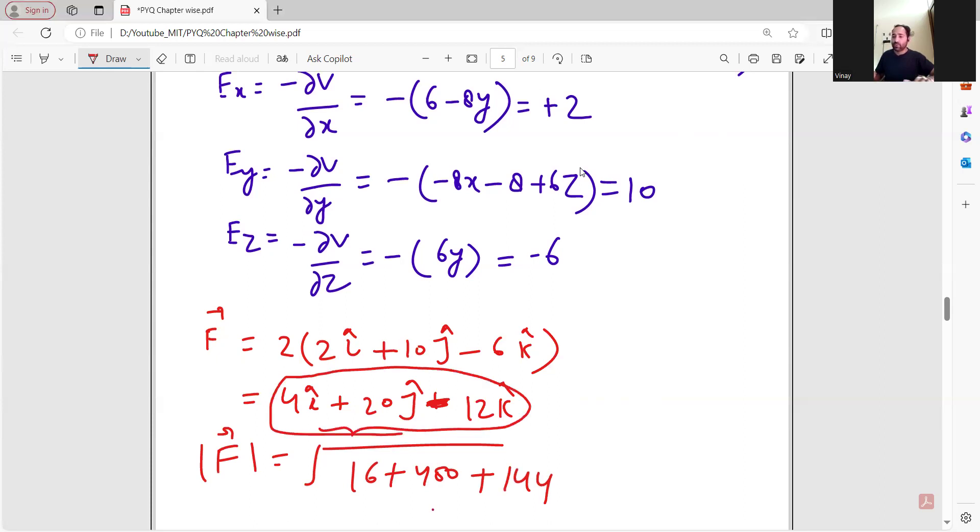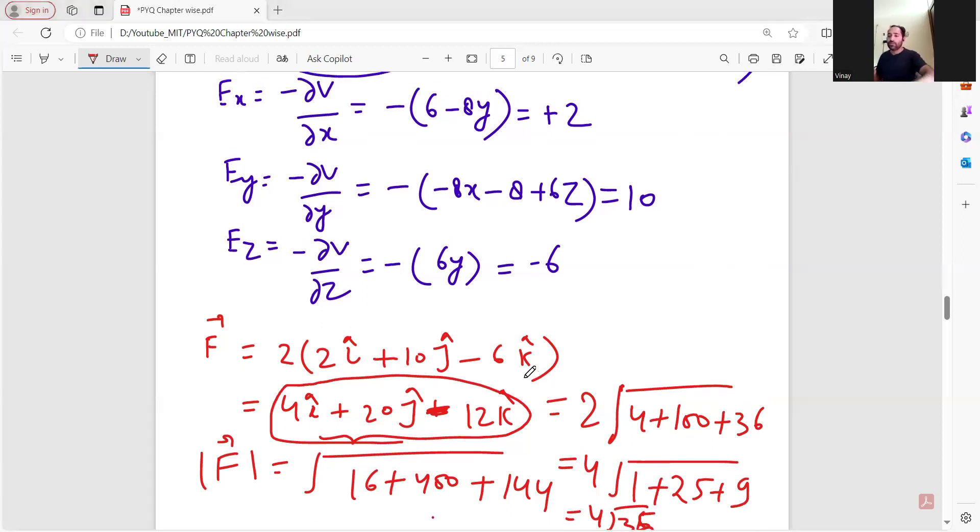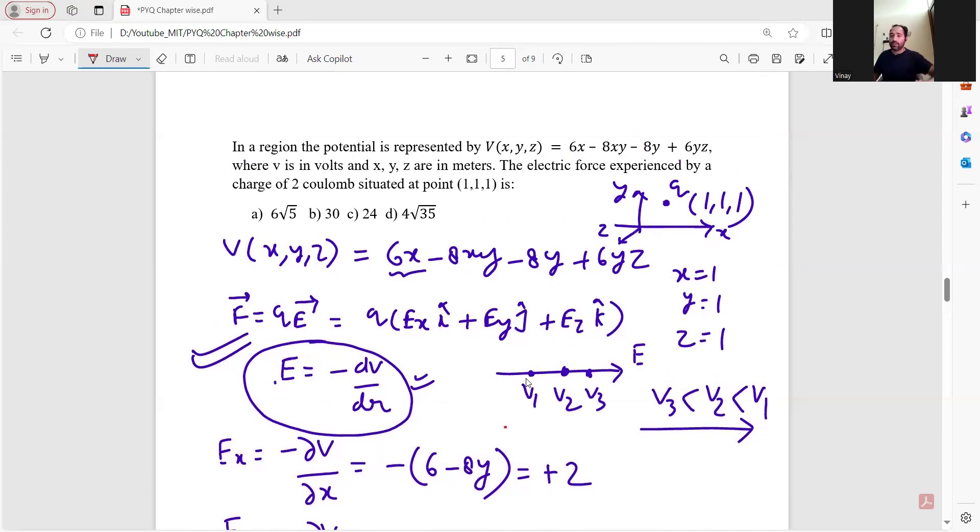F vector magnitude is square root of (16 plus 400 plus 144). Take 4 common: 4 times square root of (1 plus 25 plus 9). This equals 4 root 35.